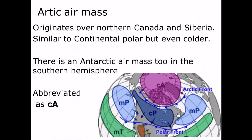The last type is continental arctic. You may see it abbreviated as CA, or just A for arctic. For the Antarctic, it's actually CAA, or just AA. But imagine everything said for continental polar — dry and cold — but even more cold. That's basically continental arctic.